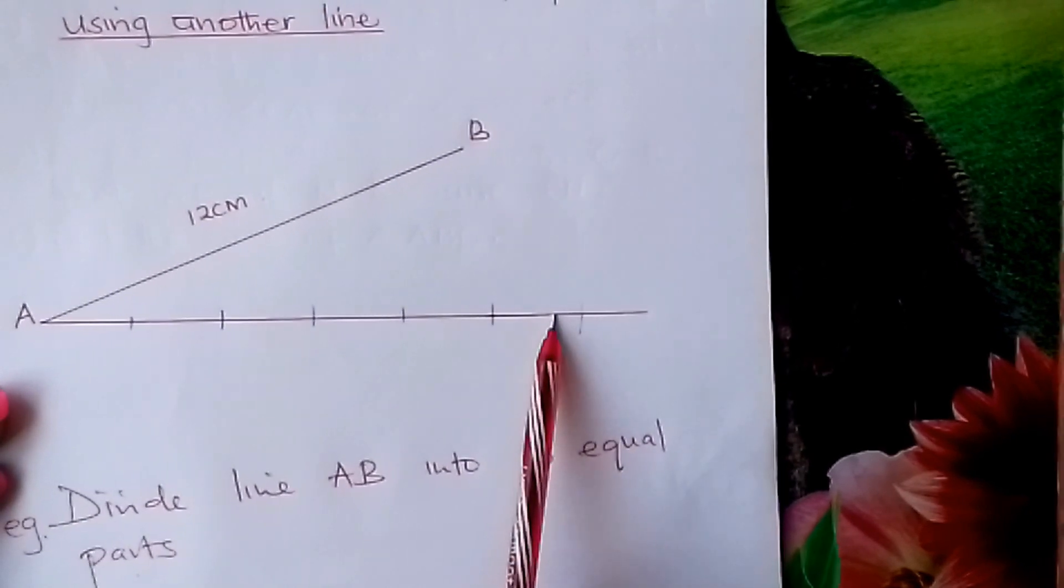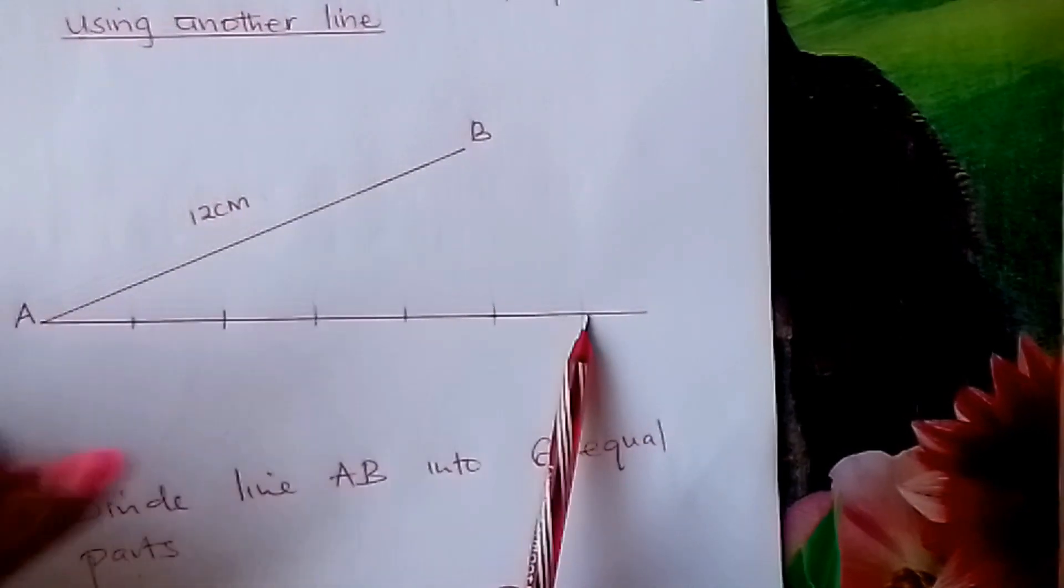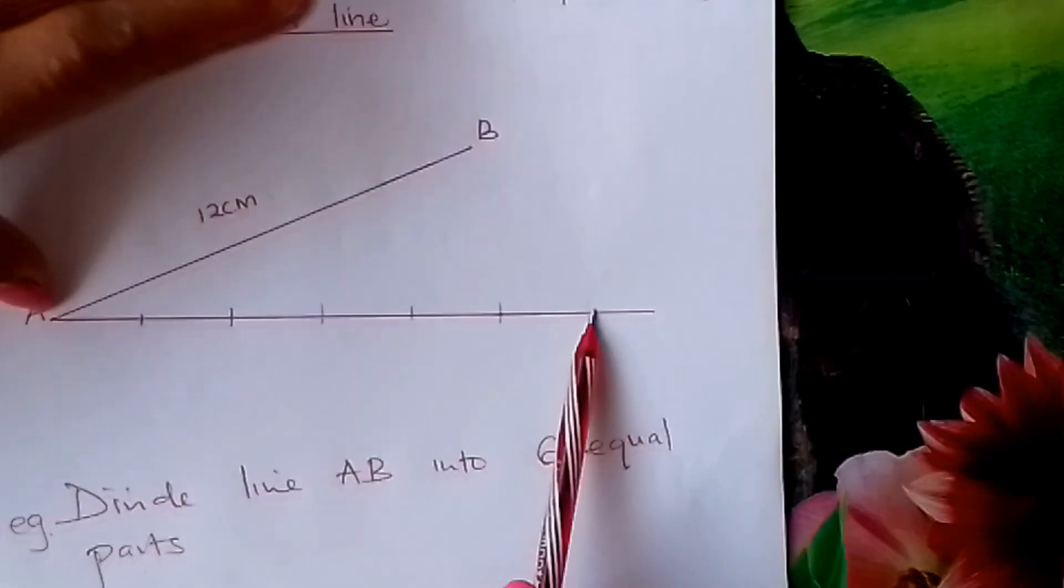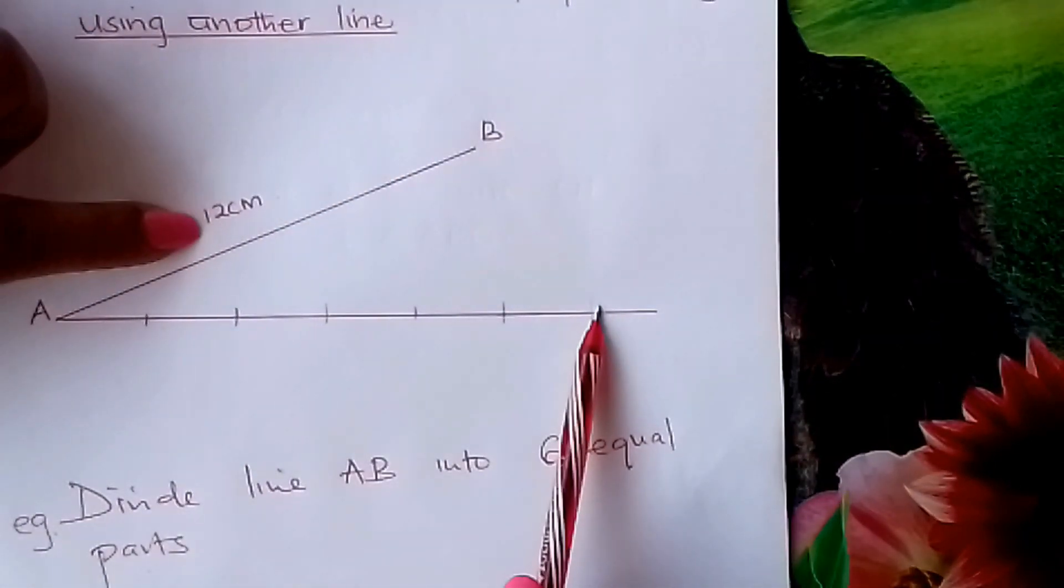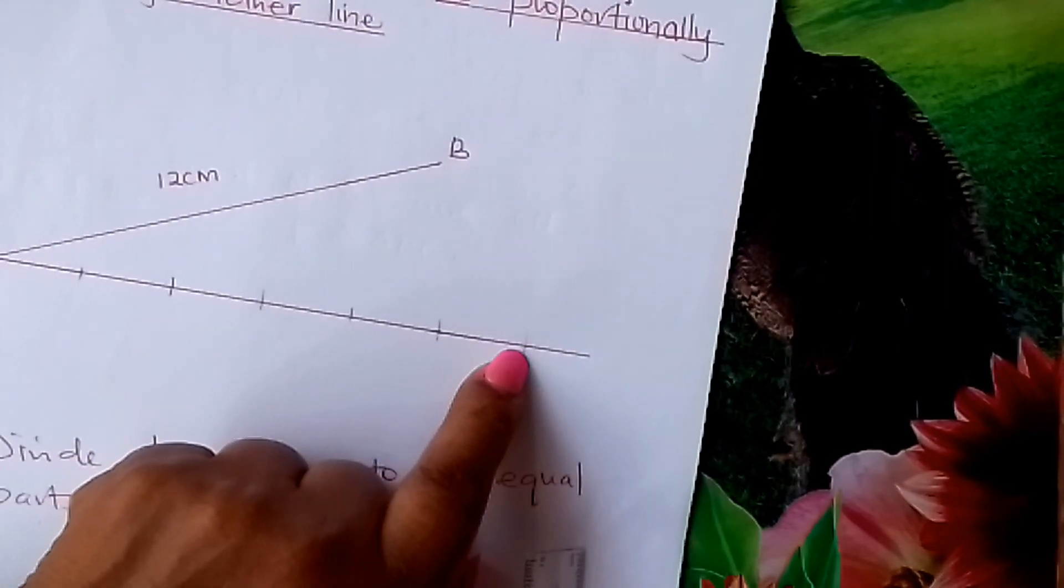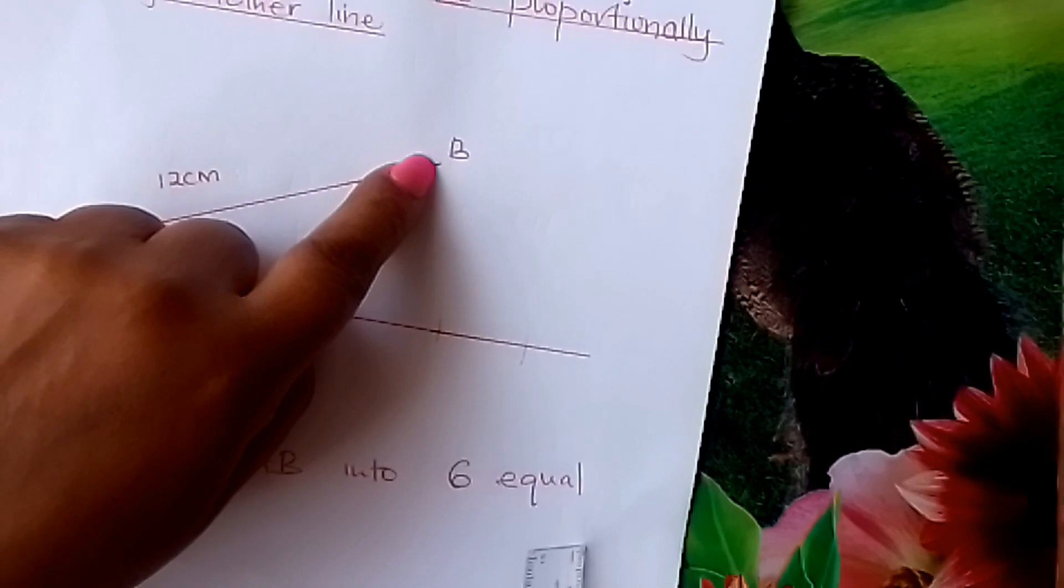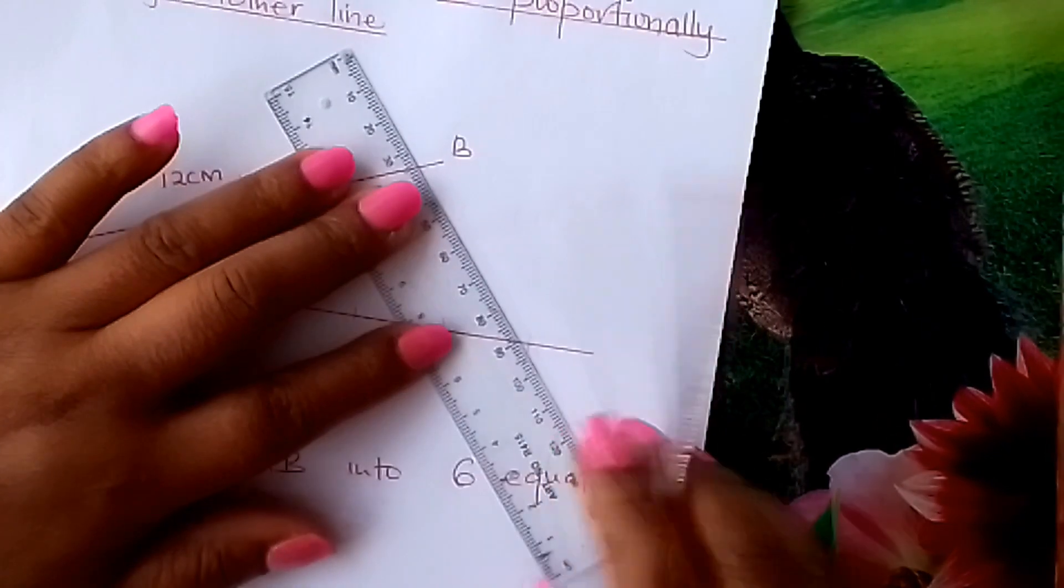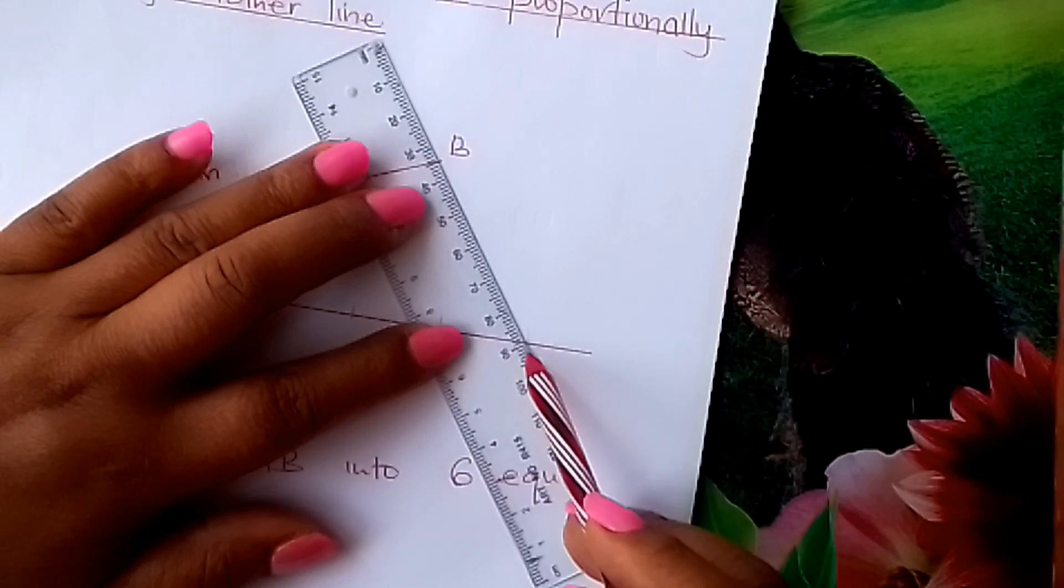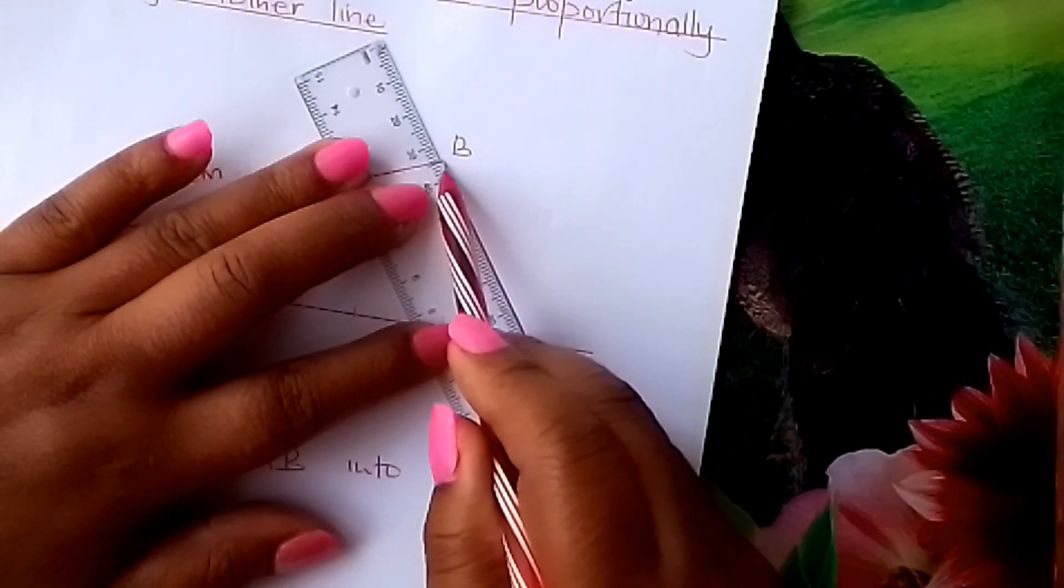After dividing this line into 6 parts, you now use it to divide the one that we want, AB, which is 12 cm. How do you go about that? You come to this mark here. You join it to B. Join that to B, learner. Look at this. You join it, like that.